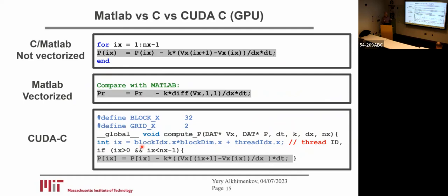I think this is actually the most important part of the presentation. That's exactly where we gain performance — by avoiding the for loop and taking advantage of thousands of little CPUs to accelerate our code.